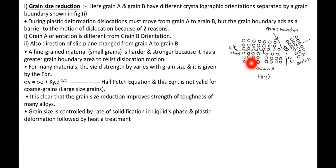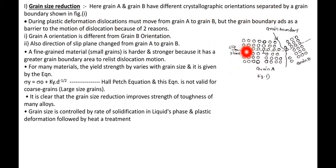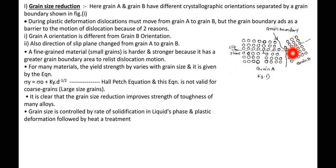Consider two grains or two crystals: this part is grain A and this part is grain B. Grain A and grain B have different crystallographic orientations separated by a grain boundary. The atoms are arranged in different orientations in each grain, and both are separated by means of a boundary known as a grain boundary. During plastic deformation, dislocations must move from grain A to grain B.